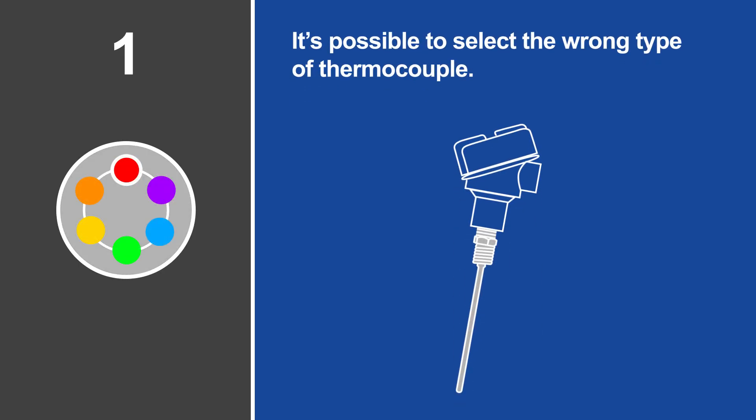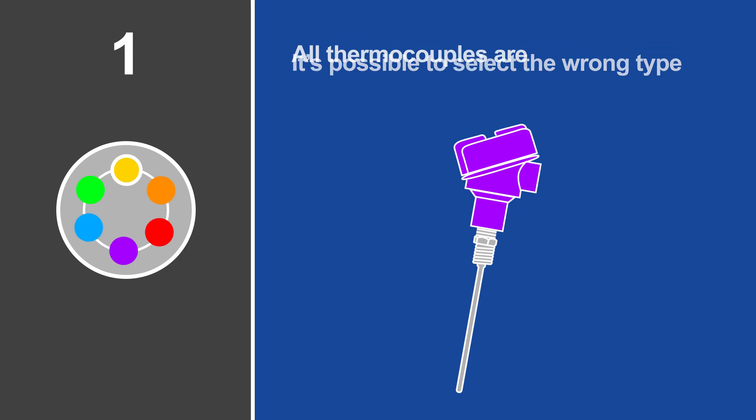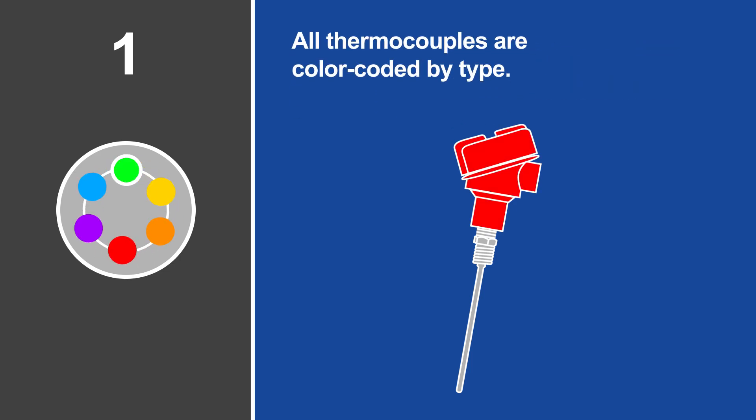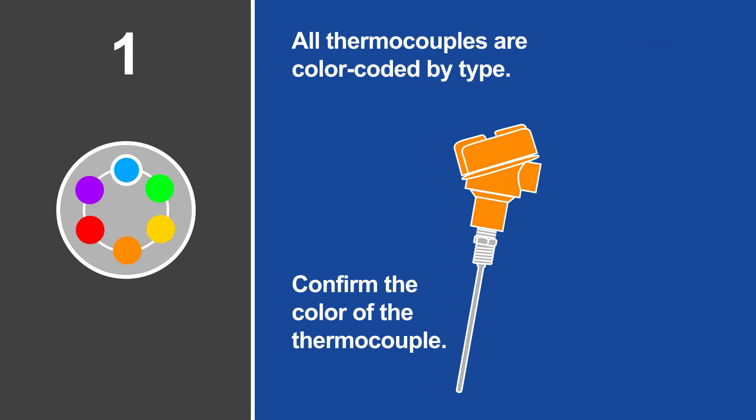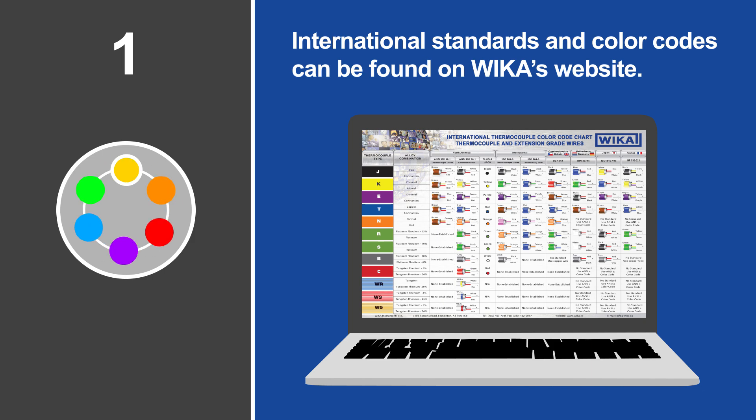When putting the settings into a transmitter during installation, it's possible to select the wrong type of thermocouple. Since almost all thermocouples are color-coded by type, you need to confirm the color of the thermocouple jacket and match the settings on the transmitter to solve this problem. International standards and color codes can be found on WICA's website.